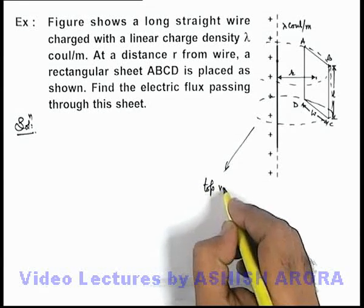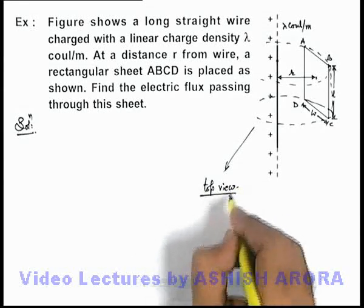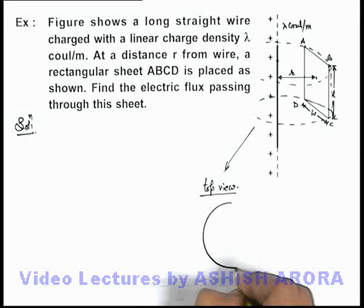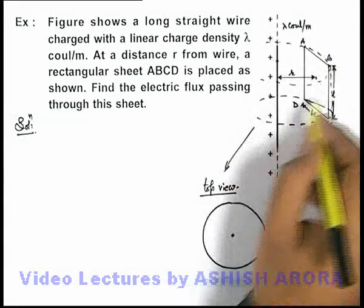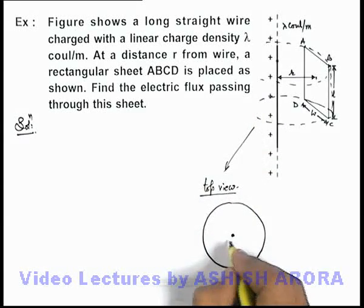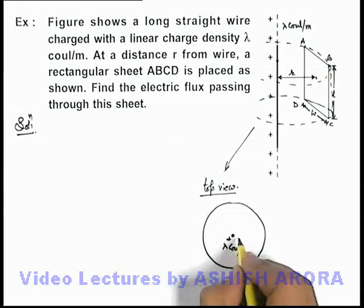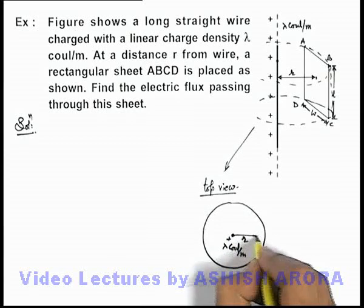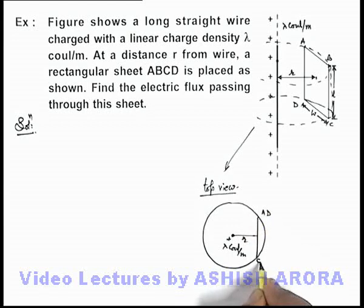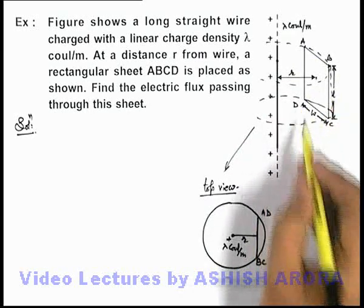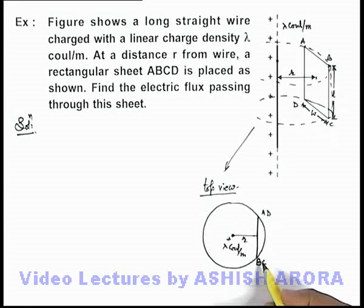Here I can draw the top view of this situation which will make this situation more clear. This is the cylindrical shaped surface we have considered, and at the centre this is the positively charged wire with charge lambda coulomb per meter. And at a distance r from it, this sheet AB and CD is placed, and here we can see the top edges of the plate is AB and CD are the bottom faces which we can see here.